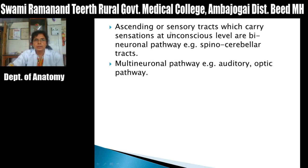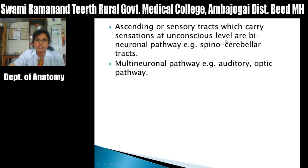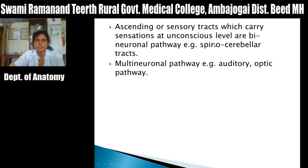Ascending tracts carrying sensations at the unconscious level are bineuronal pathways — they consist of only two neurons in their course. An example is the spinal cerebellar tracts. Some ascending pathways are multineuronal pathways, such as the auditory pathway and optic pathway.